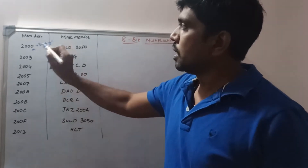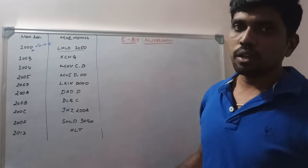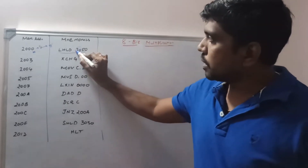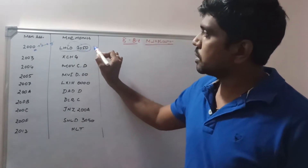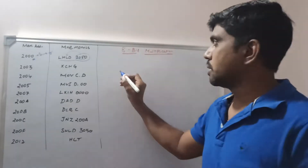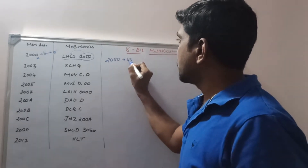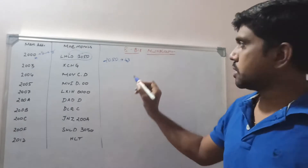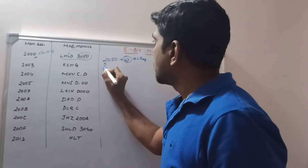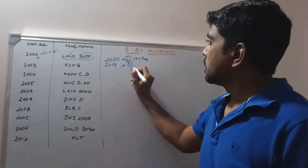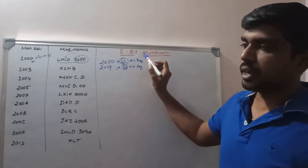At location 2000H, you write the instruction LHLD 2050H. This instruction loads whatever value is present in memory location 2050H into the H and L registers. Consider memory location 2050H containing the value 43, which is transferred to the L register. The next address 2051H contains the value 03, which is transferred to the H register. So in this 8-bit multiplication you need two data: first data from 2050H and second data from 2051H.